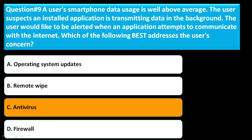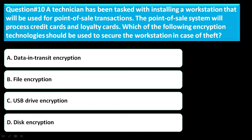Question number ten: a technician has been tasked with installing a workstation that will be used for point-of-sale transactions. The system will process credit cards and loyalty cards. Which of the following encryption technologies should be used to secure the workstation in case of theft? Option A: data in transport encryption. Option B: file encryption. Option C: USB drive encryption. Option D: disk encryption. The correct answer is option D — disk encryption.